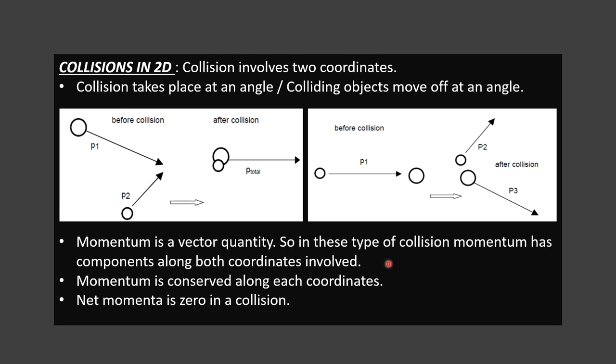Momentum is conserved along each coordinate, because the net momentum is zero in a collision. So how do we show that momentum is conserved? When a momentum vector diagram is given, how do we confirm momentum is conserved? Let us analyze the situation one by one.